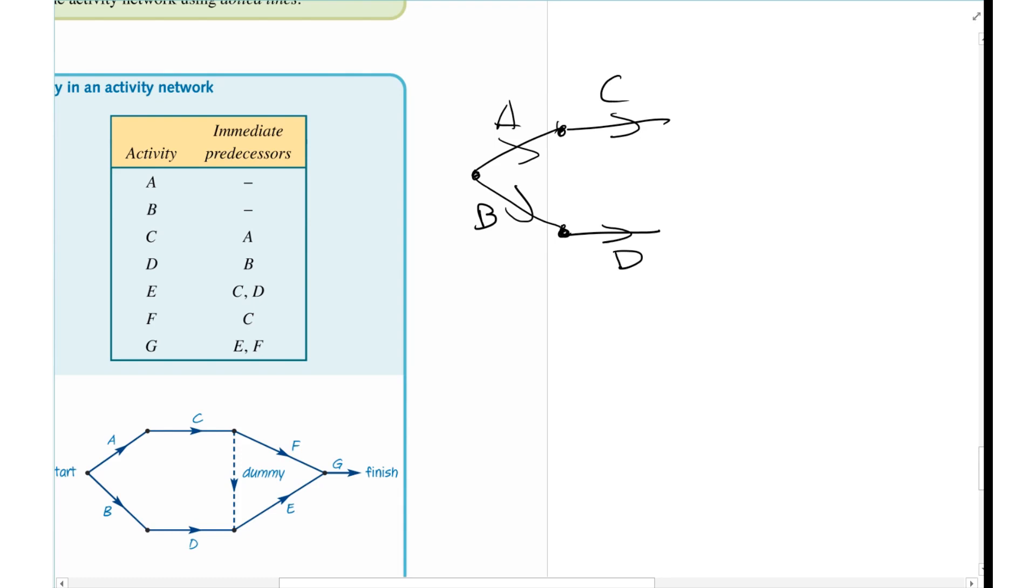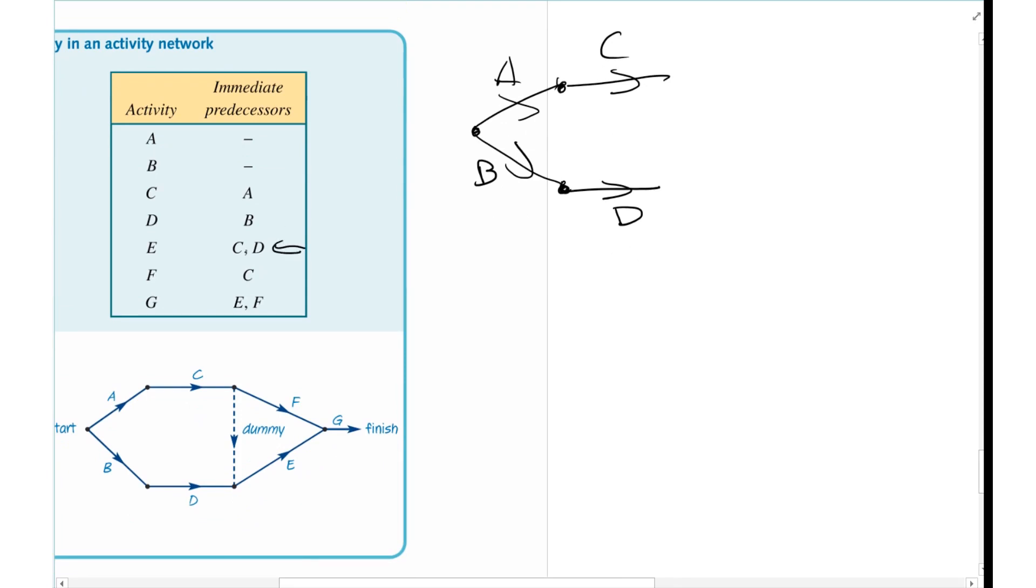E needs C and D. So in this case, as you can see here, C has a different partner because it's got a partner of D and no partner. So it has two different partners using my analogy before. So that's where my dummy is going to be. And this is where my dummy has to be for E, because it needs to connect from C. So I'm going to go dot, dot, dot, arrow down. And from there, I'm going to have E coming up.